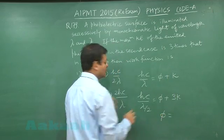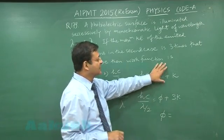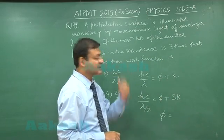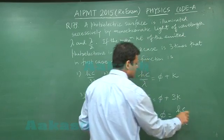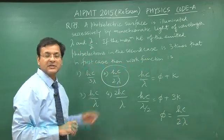If you solve this, multiply the first equation by 3. Then subtract the two equations, and you will get phi equals hc/2λ. This is the answer. So the second option is correct for question 179. Now let's move to the last question, question 180.